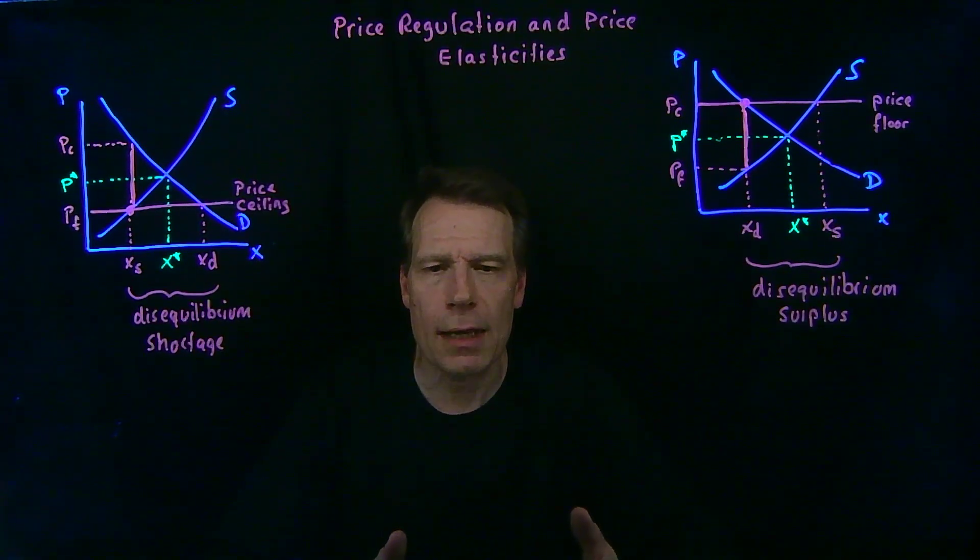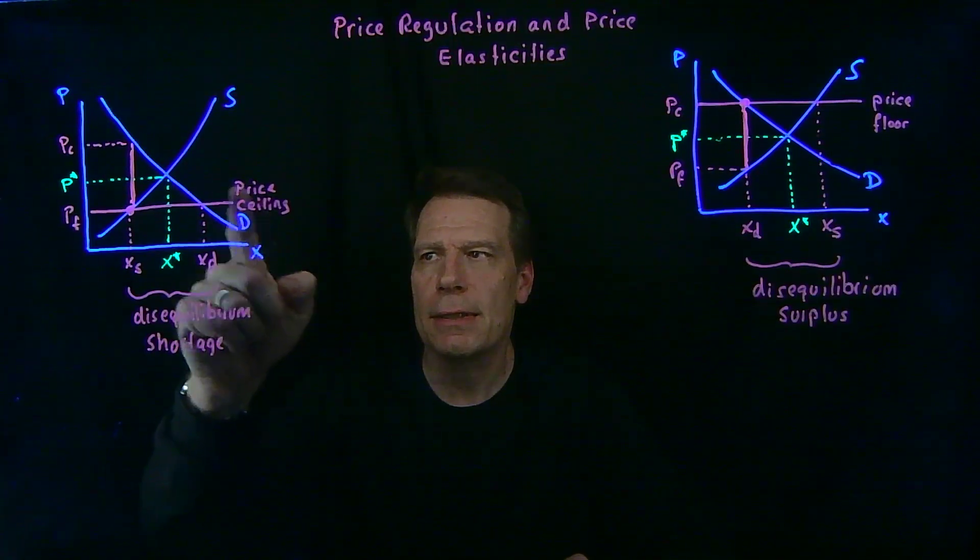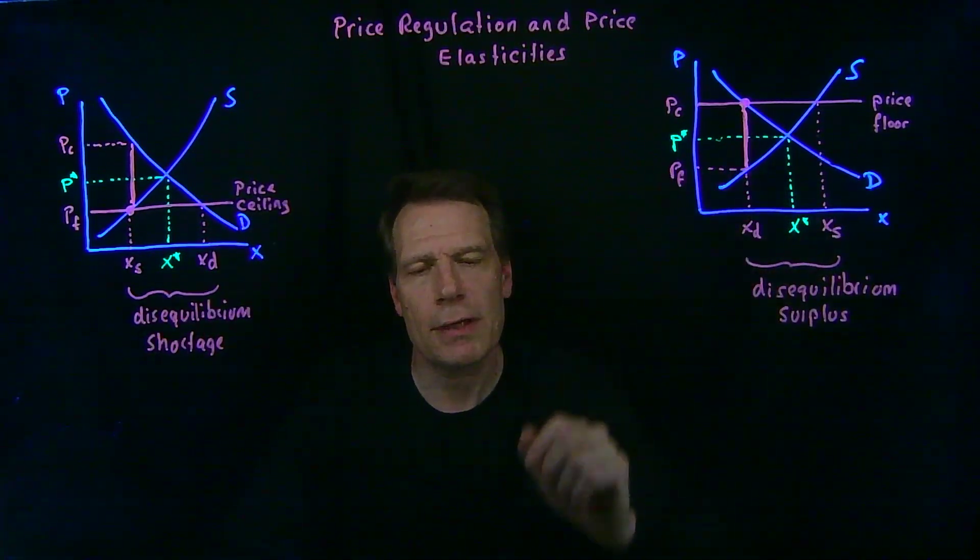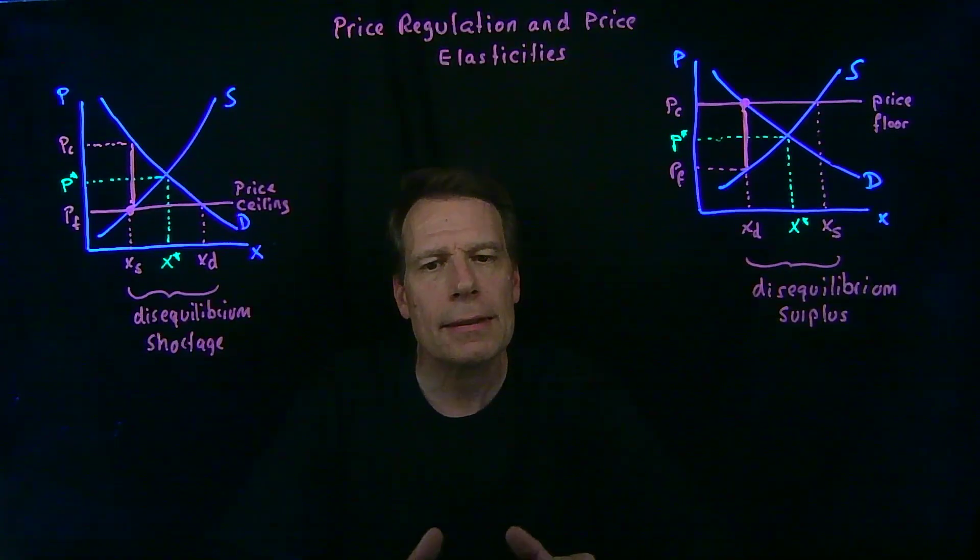We've now explored the economic consequences of two types of price regulations: price ceilings that are set below the equilibrium price and price floors that are set above the equilibrium price. In each case, we found a way to graph those economic consequences without cluttering the graph with shifts in supply and demand curves, even though we know that there are underlying shifts that give rise to those economic consequences.